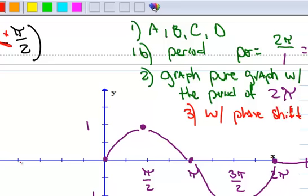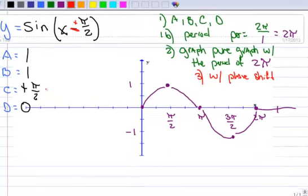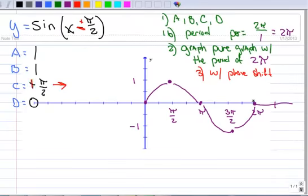A phase shift means it is going to move to the right because this is positive. And again, I know it's confusing, but it's x minus pi over 2. But because pi over 2 is positive, then it moves to the right.